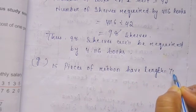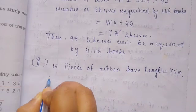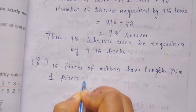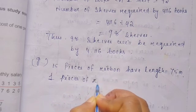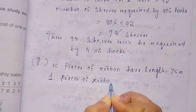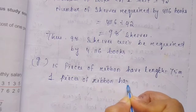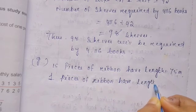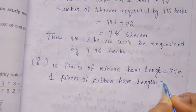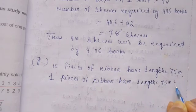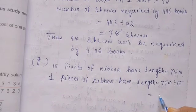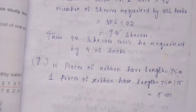One piece of ribbon has length equal to 75 metres divided by 15. 15 times 5 is 75. The answer is 5 metres.